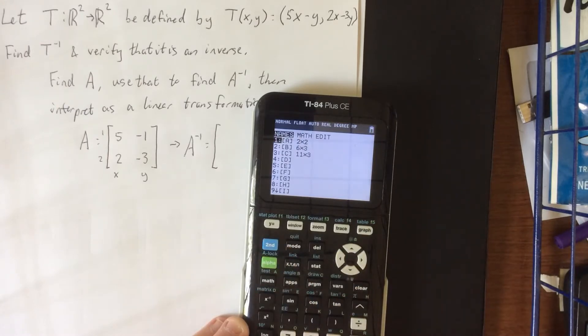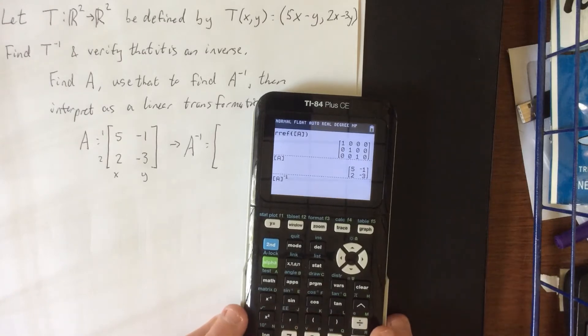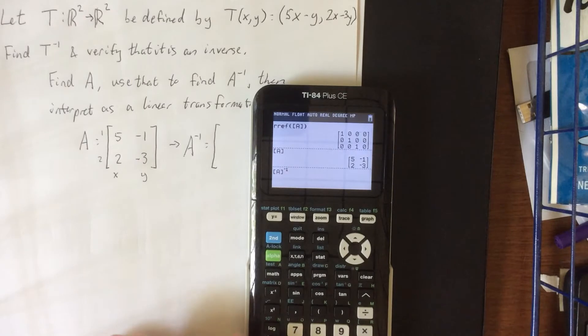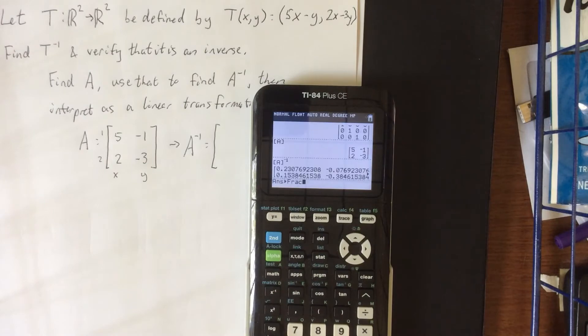Re-entering the matrix menu, I'm going to select matrix A and then press the inverse button. Upon pressing the inverse button, this will give you the inverse, but it's going to give you a bunch of messy looking decimals. So pressing math followed by enter, followed by enter, will convert all of that to a fraction for you.